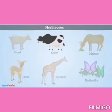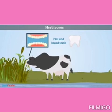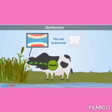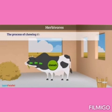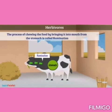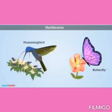Herbivores have flat and broad teeth which help them to pull plant leaves and grind them. They first eat food and fill their stomach, then when relaxed, bring the food back into the mouth for proper chewing. This process is called rumination. Butterflies and hummingbirds have a straw-like shape with which they suck the sweet juice called nectar from flowers.